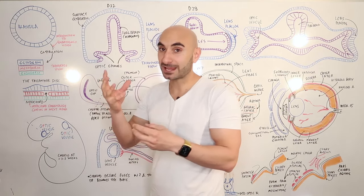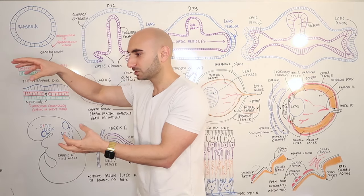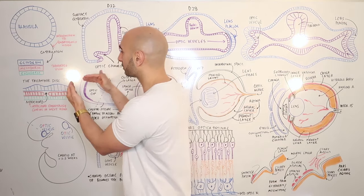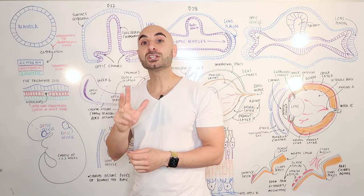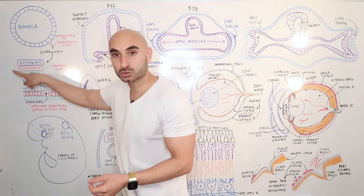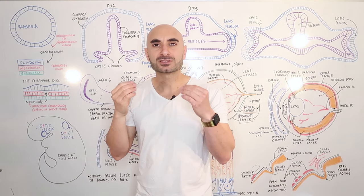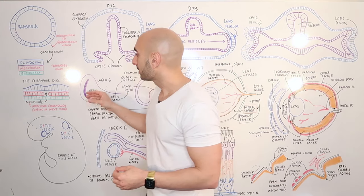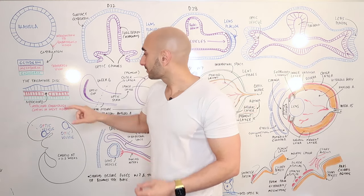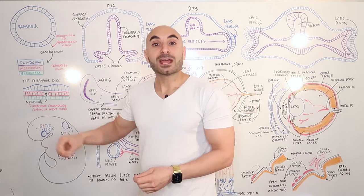We're going to begin at the beginning with the blastula. The blastula is a result of multiplication of a bunch of cells from when a sperm fertilizes an egg. This ball of cells continues to differentiate, goes through the uterine tube into the uterine canal, plants into the uterine wall, and a process of gastrulation will form three germ layers: the ectoderm, mesoderm, and endoderm.